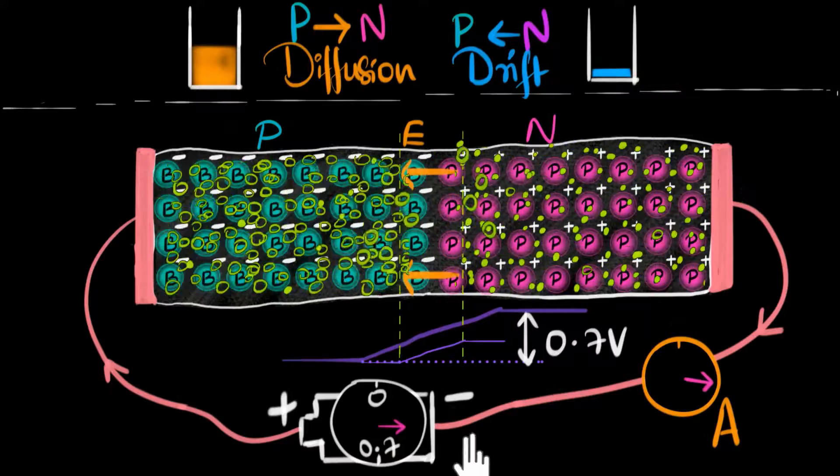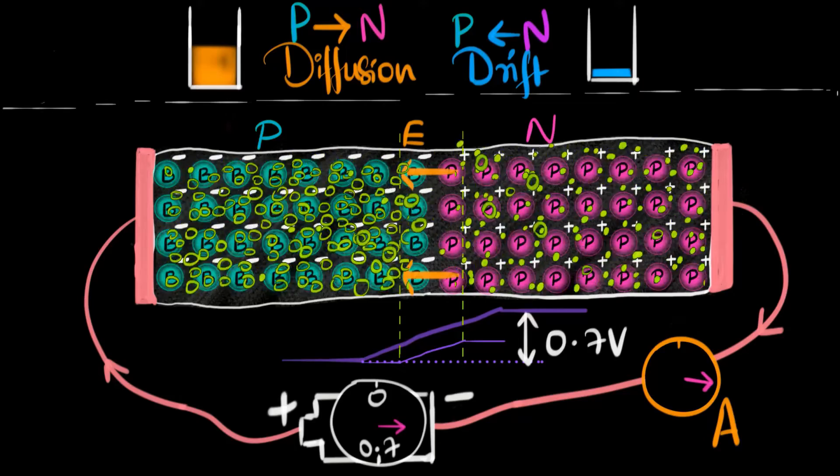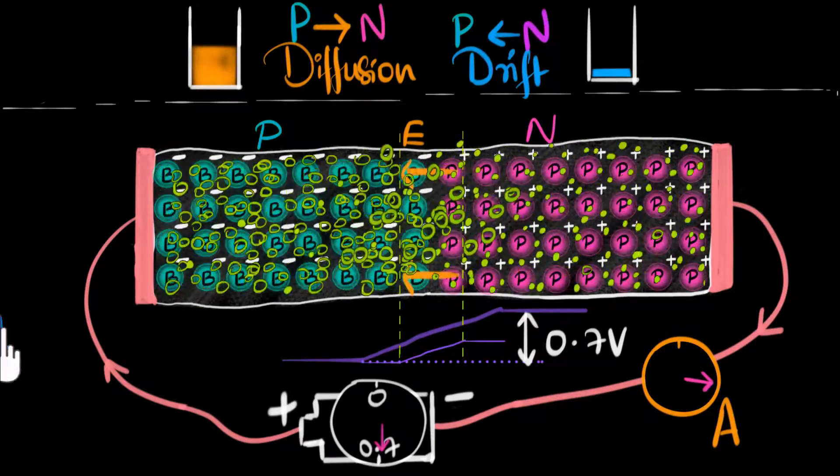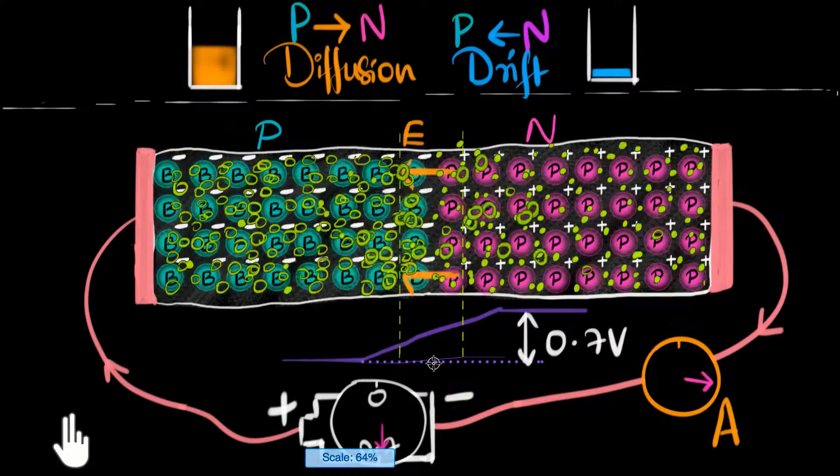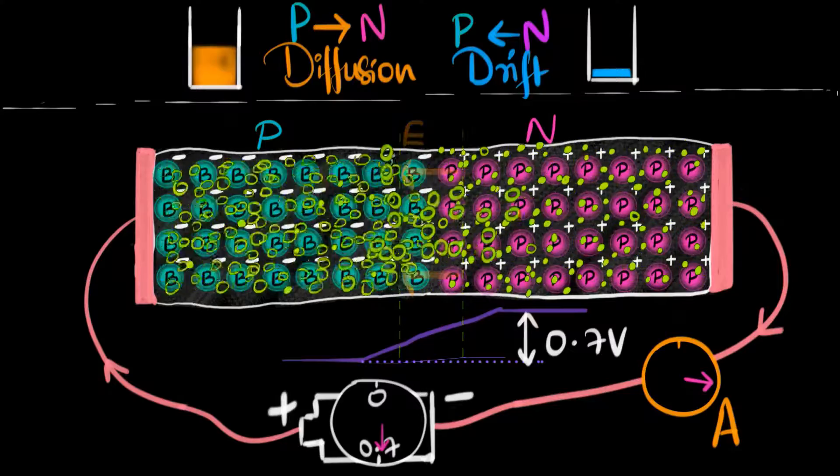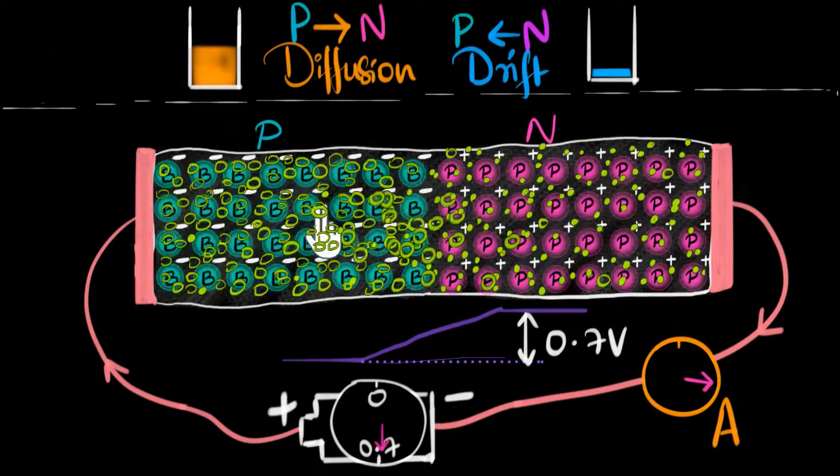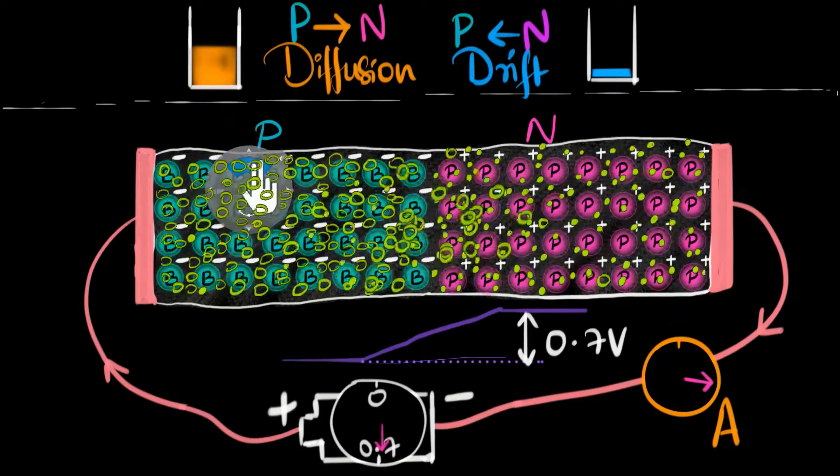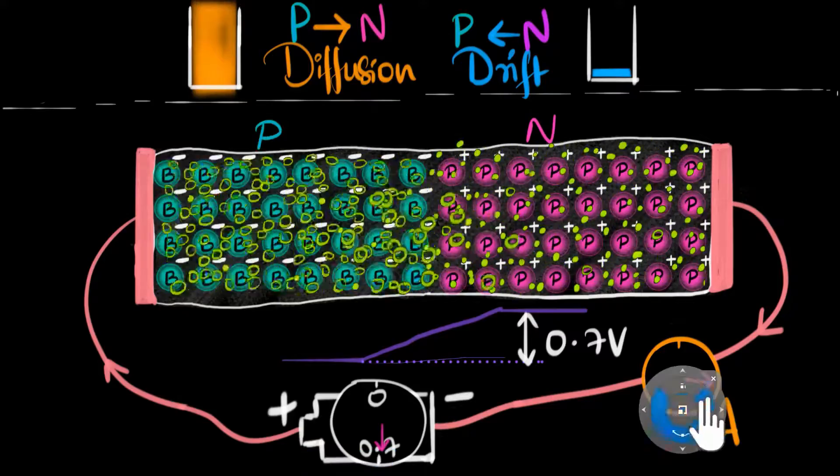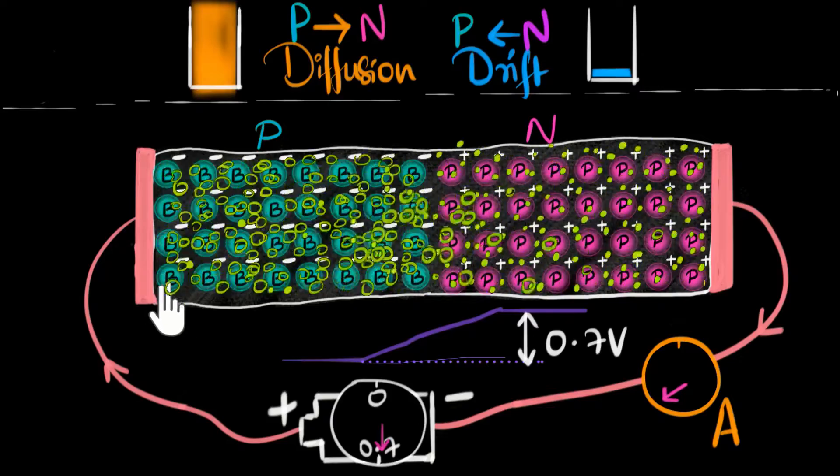Eventually, if you get this voltage all the way to 0.7V, then all hell breaks loose. Now the barrier height is almost gone, it's zero. The depletion region almost vanishes. The electrons and the holes are now completely free to diffuse into each other. As a result, the diffusion current skyrockets. It becomes extremely high, so the current becomes very high in the circuit.